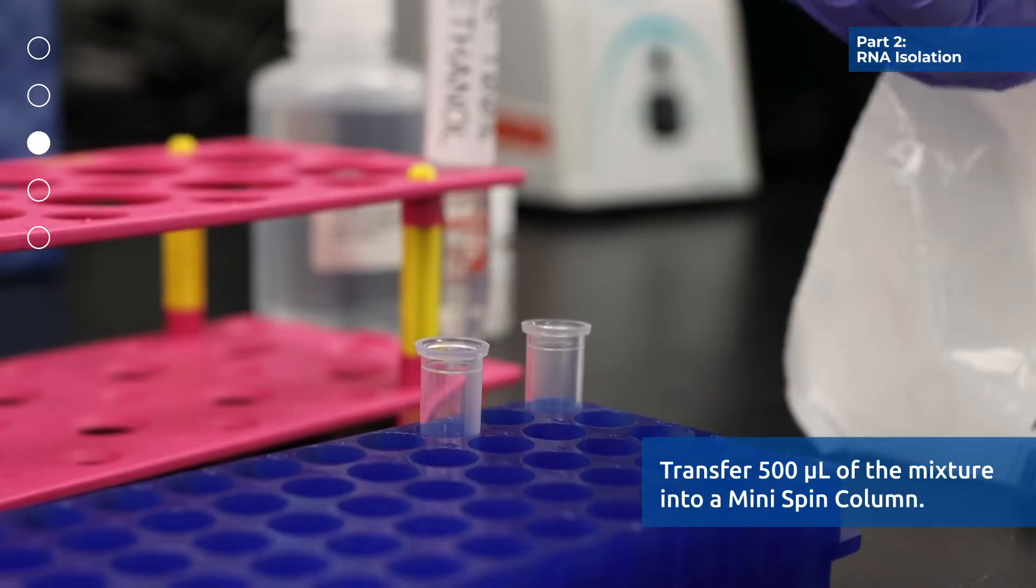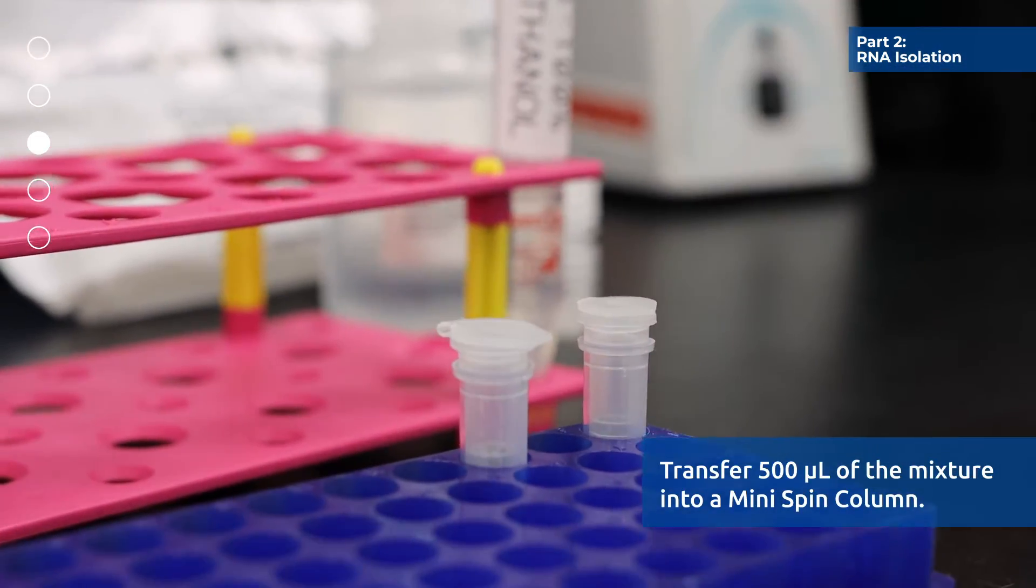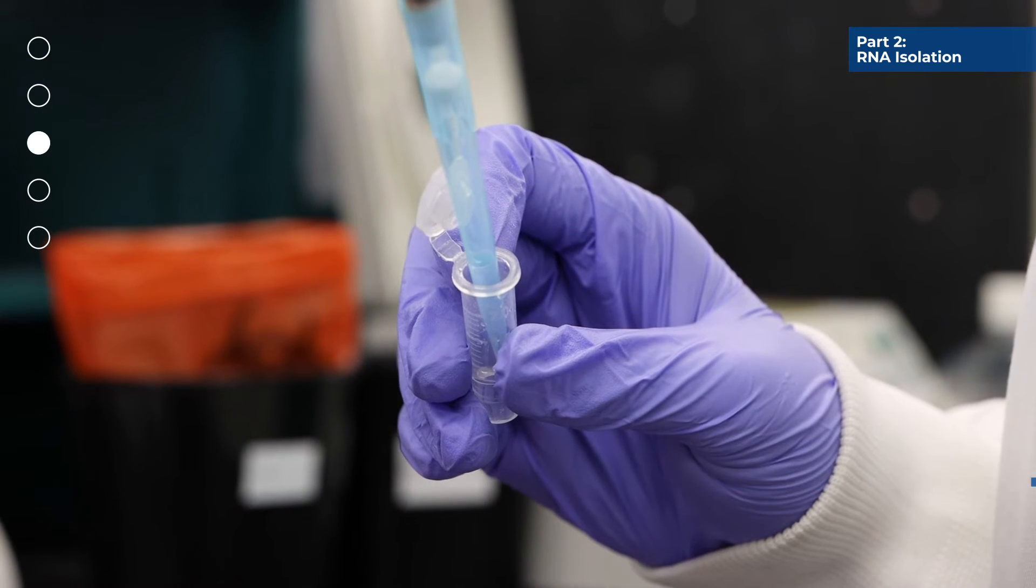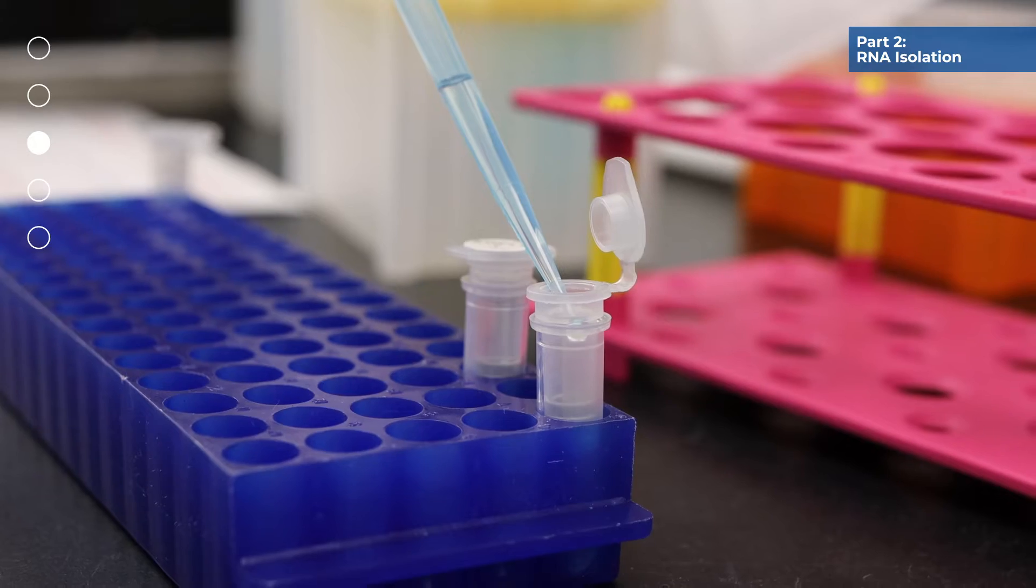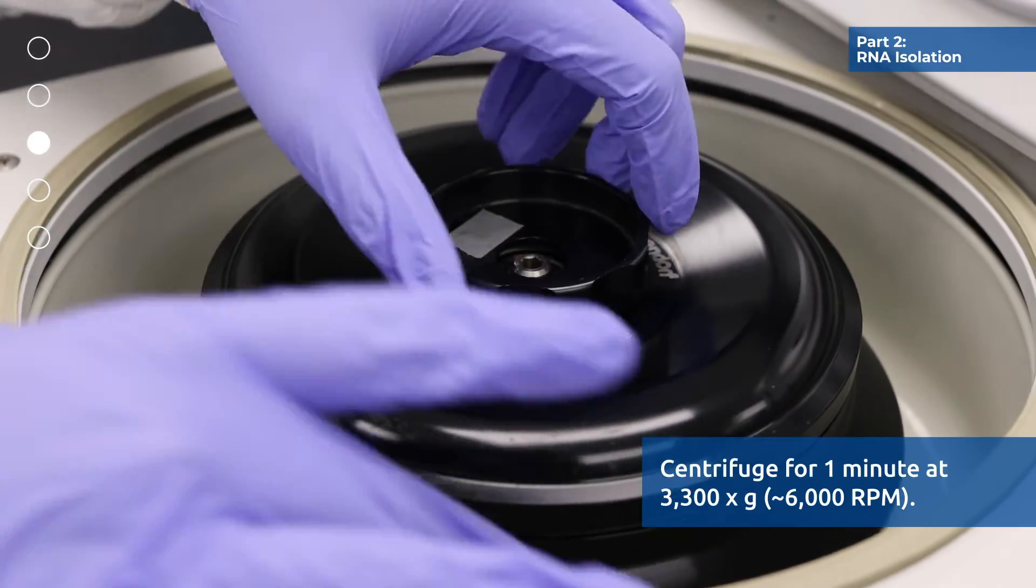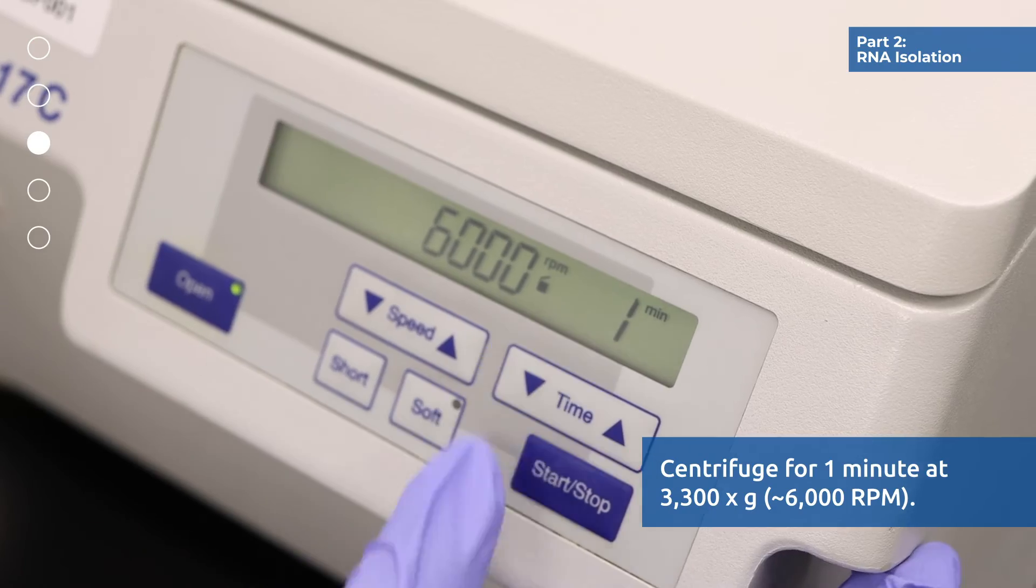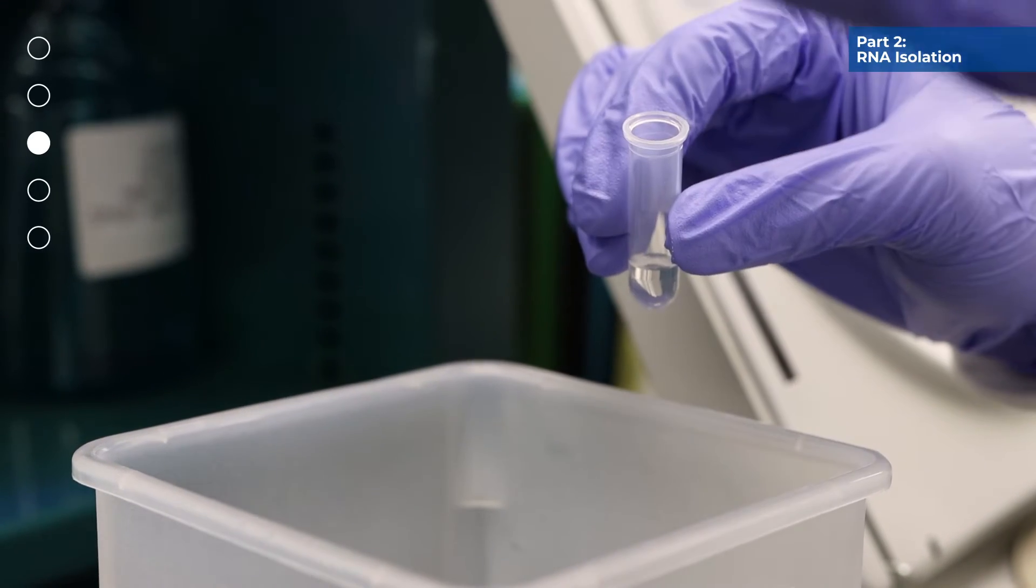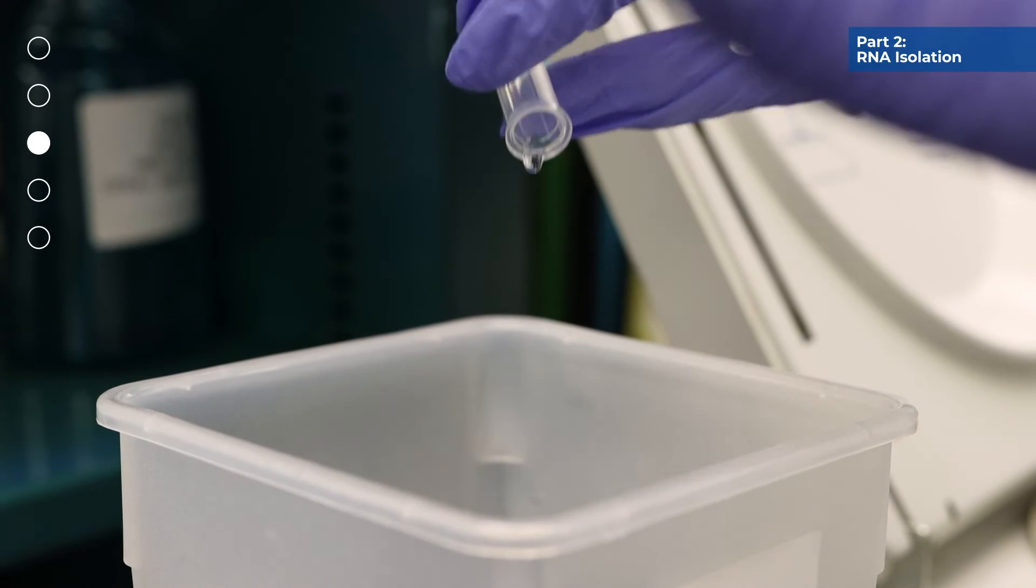Transfer 500 microliters of the mixture from step 3 into a mini-spin column. Centrifuge for 1 minute at 3300 g or 6000 rpm. Discard the flow-through and reassemble the spin column with its collection tube.